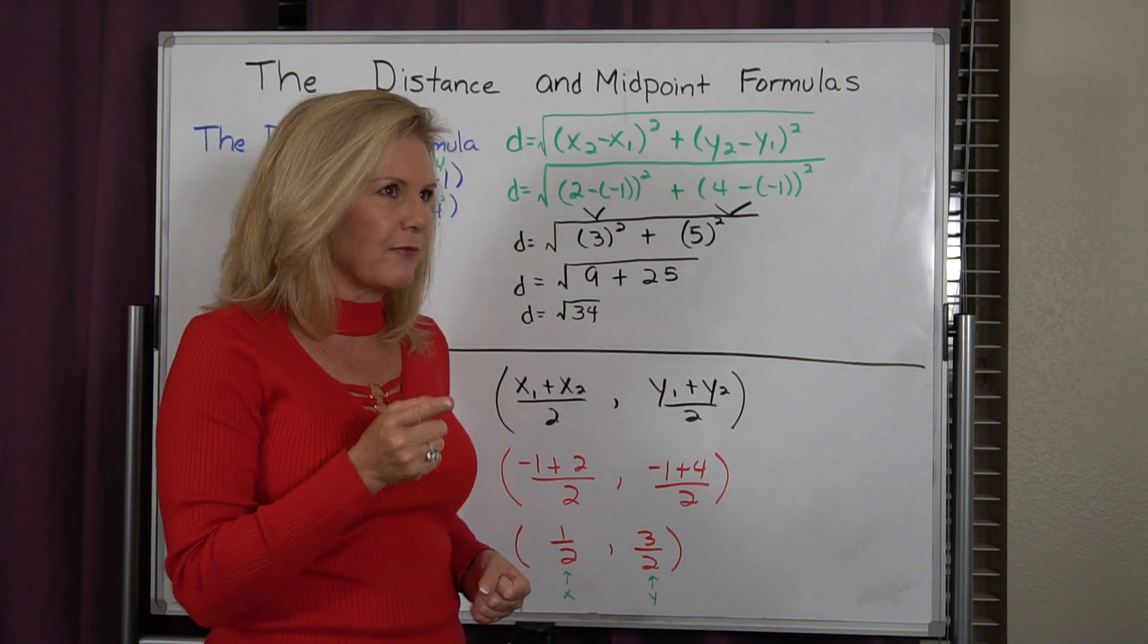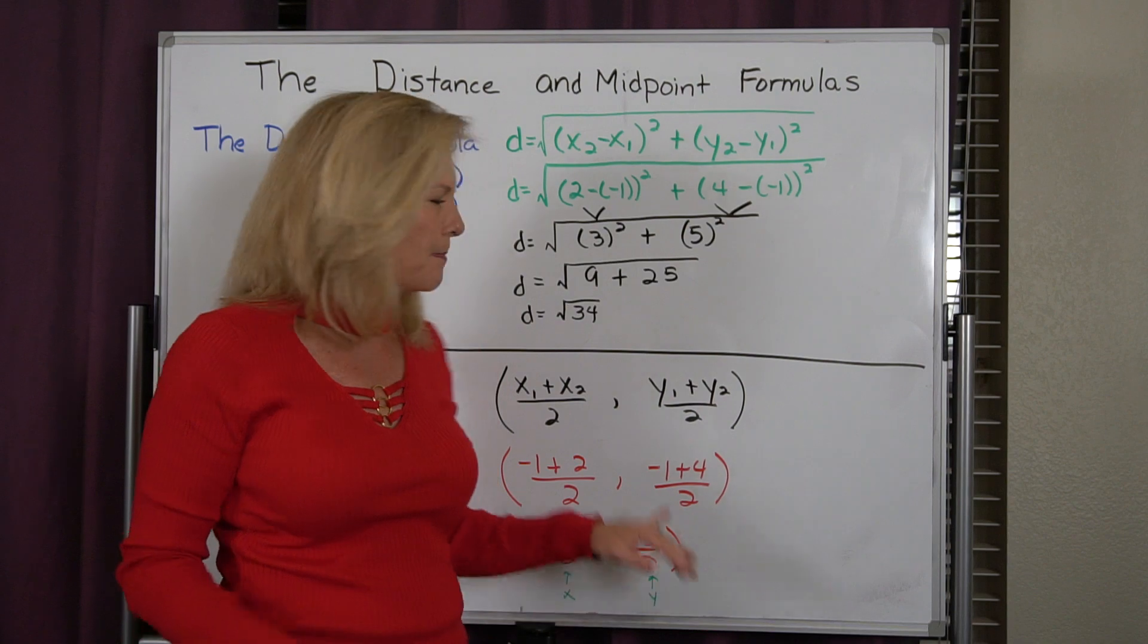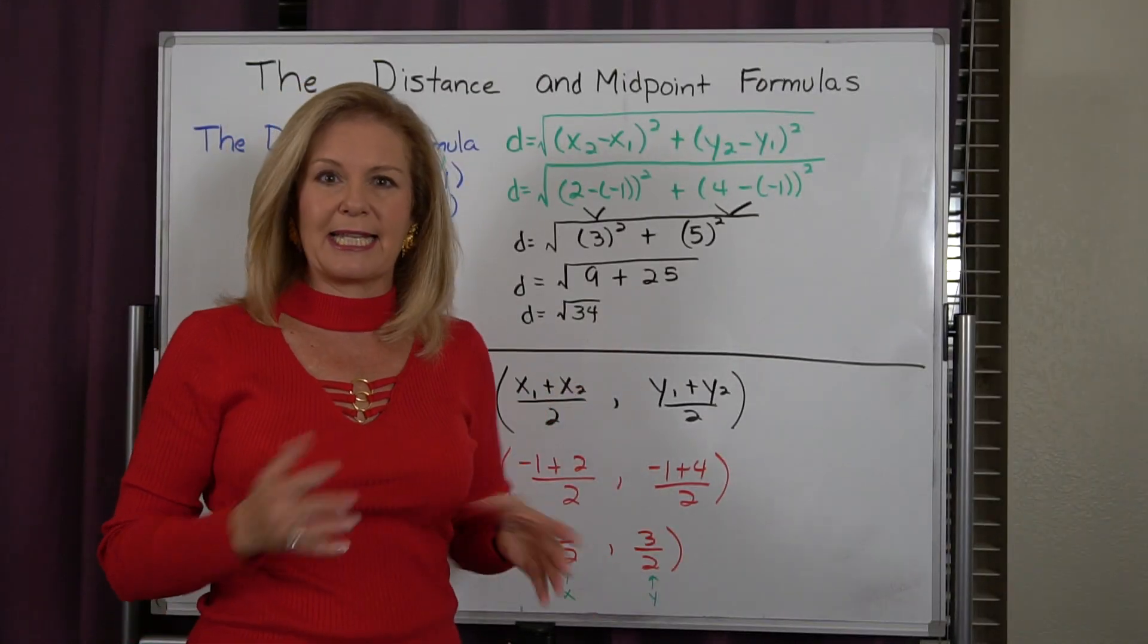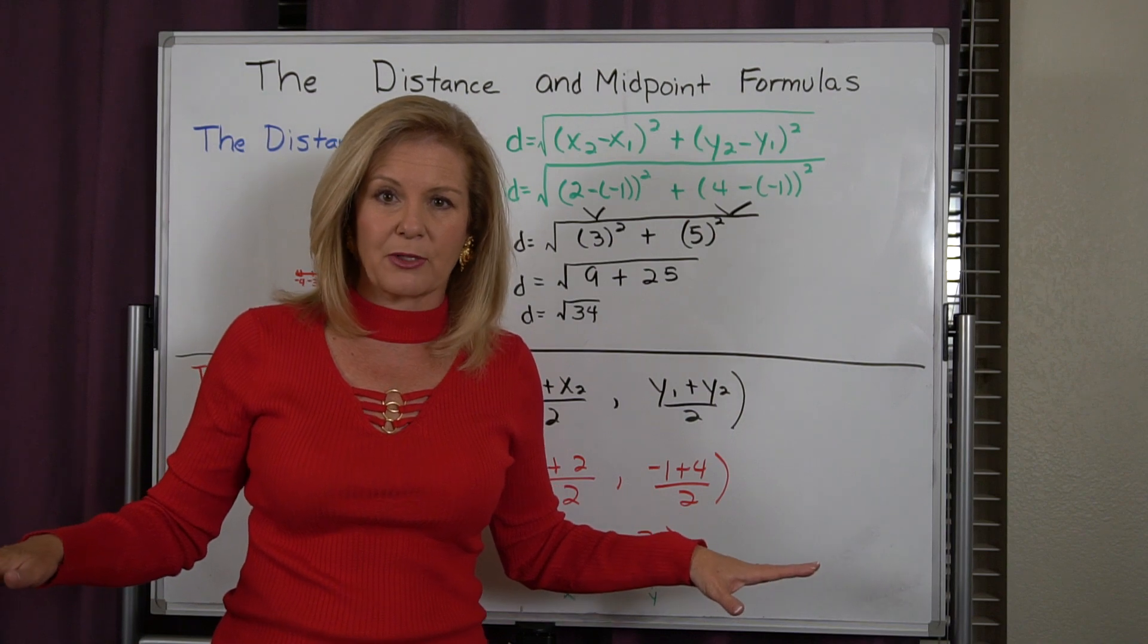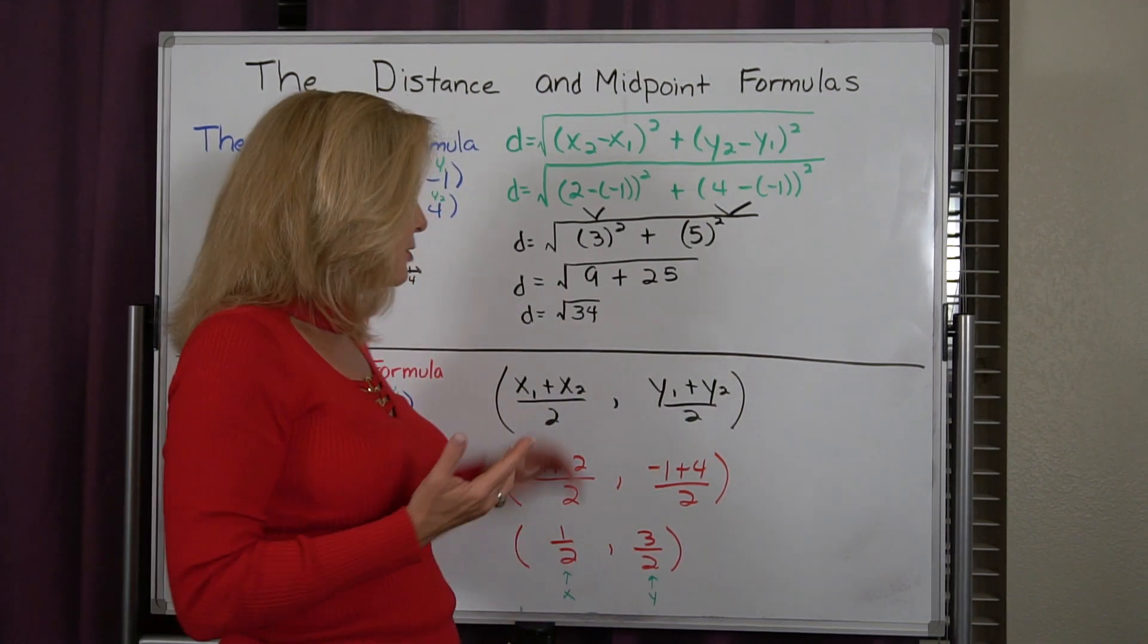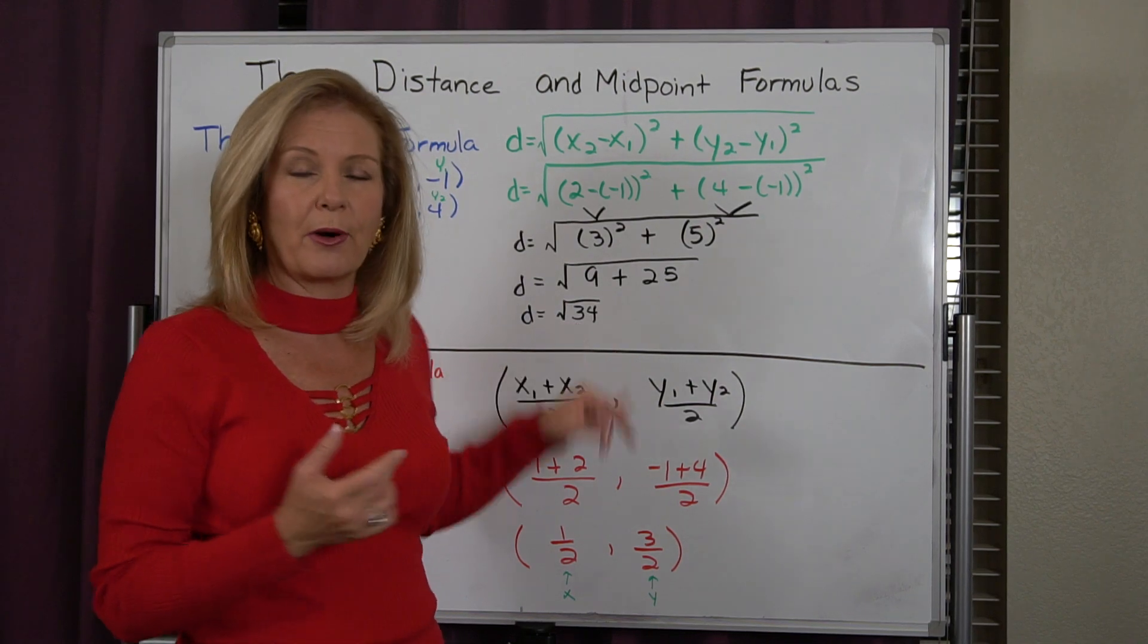Now I think to myself, can I factor anything out? Well, I know it's 1 times 34, and it's 2 times 17. None of those are going to make perfect squares. So I just leave my answer as d equals the square root of 34.